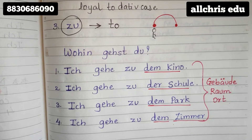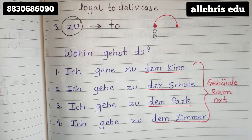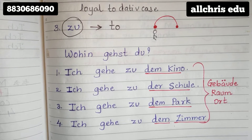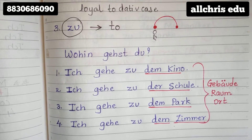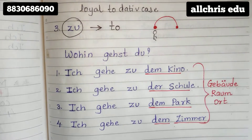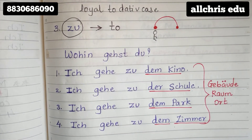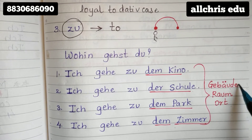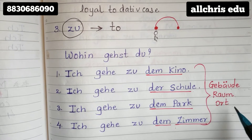So if you are going to such places which is not a building, which is not a room, but still it is a place — it is not a country, it is not a city — that time you can use the word 'zu'. The word 'zu' can be used for Gebäude, Raum, and Ort.